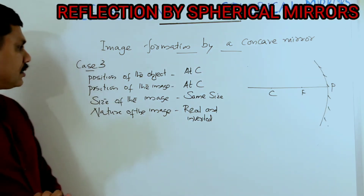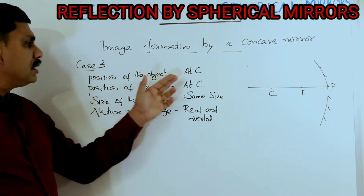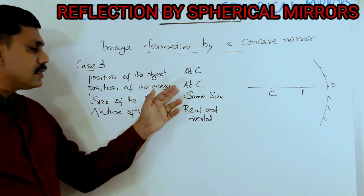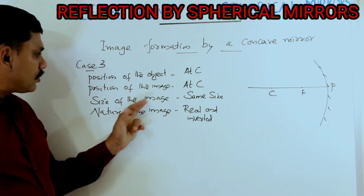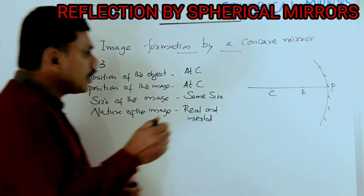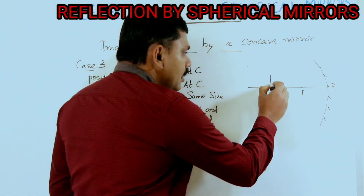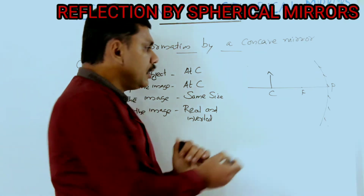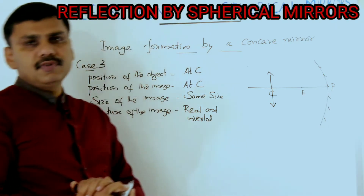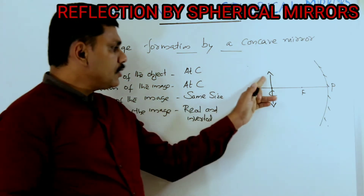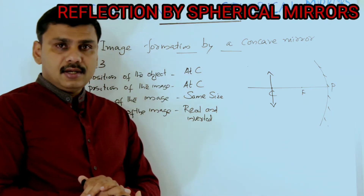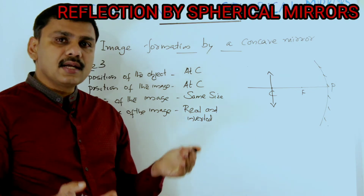Case number three is very simple. The position of the object is at the center of curvature, and the position of the image is also at the center of curvature. The size of the image is the same as the object, and the nature of the image is real and inverted. So when we place the object at C, the image forms at C itself with the same size, real and inverted.